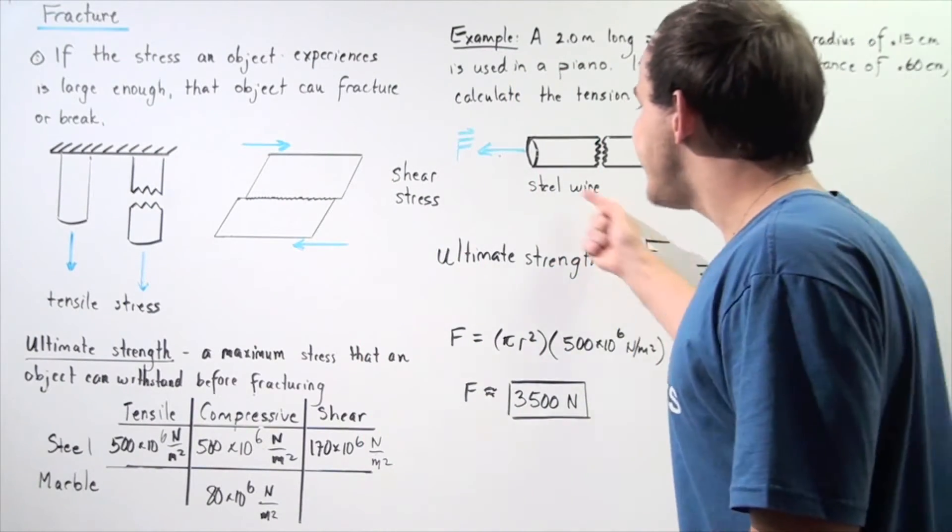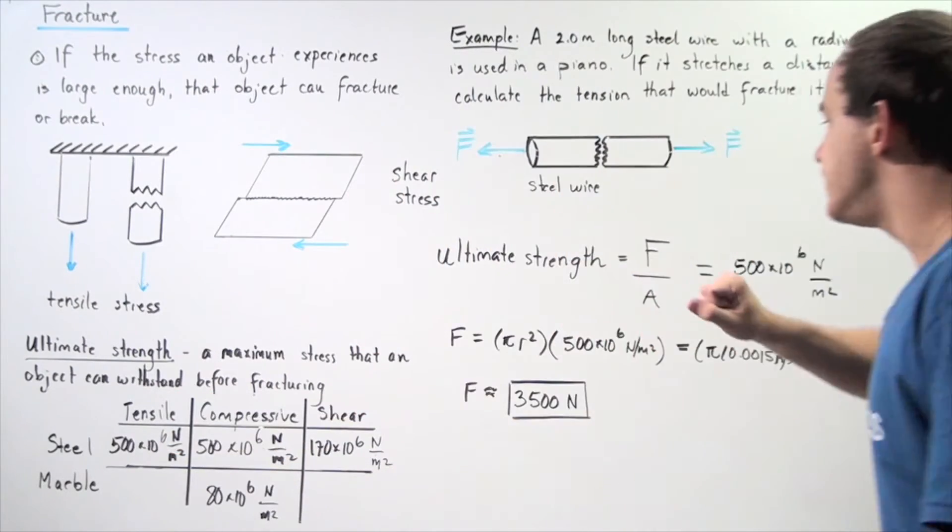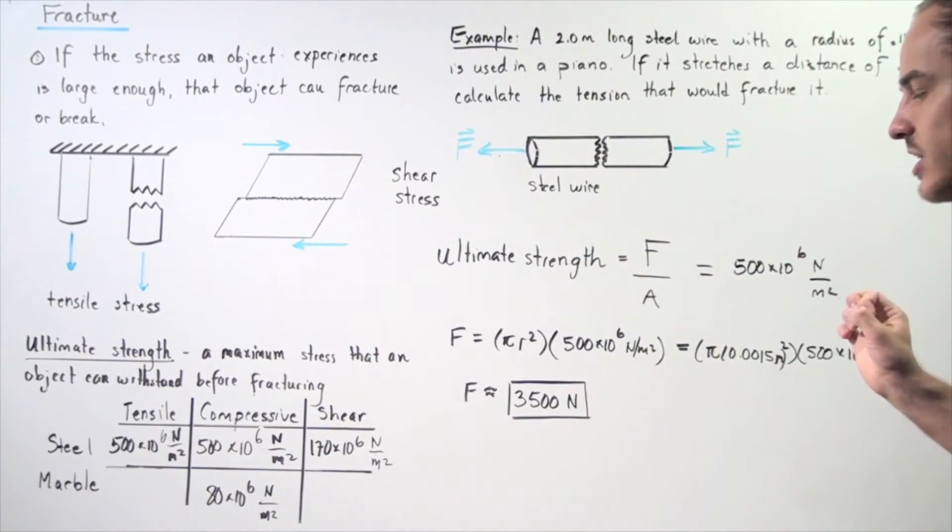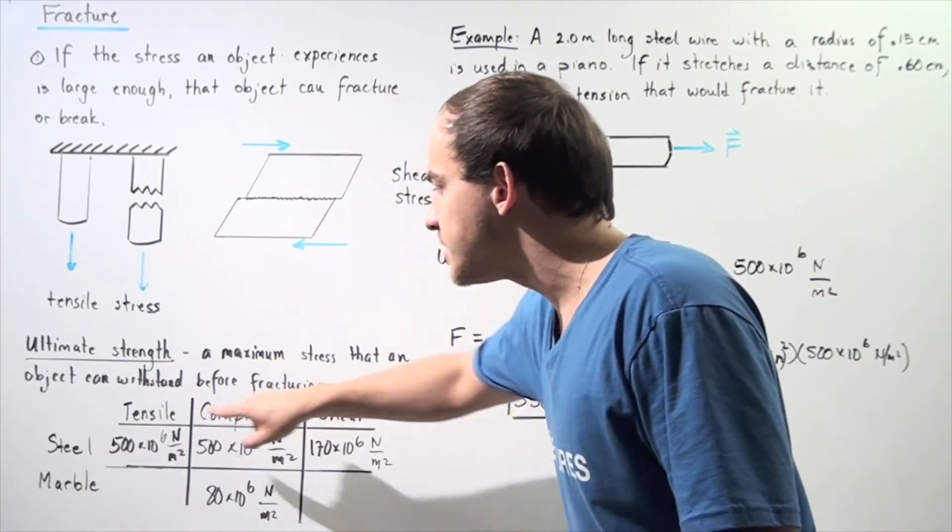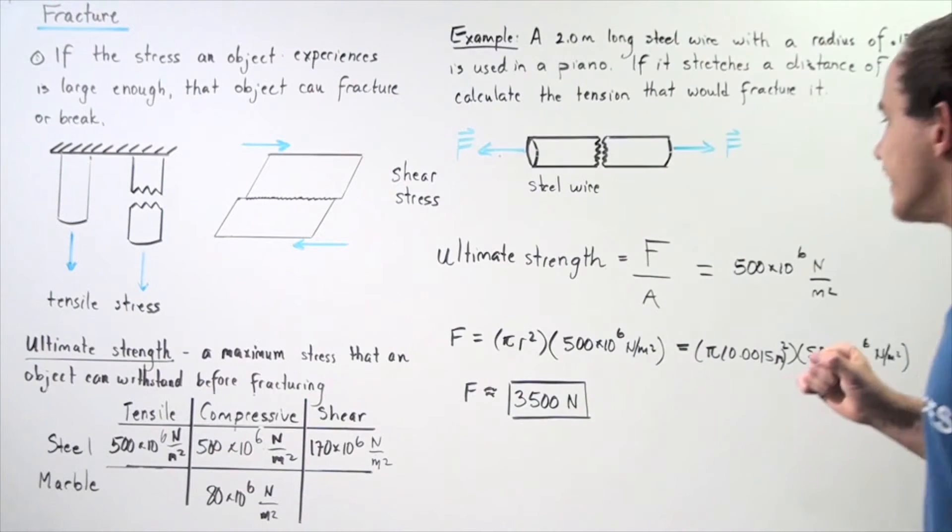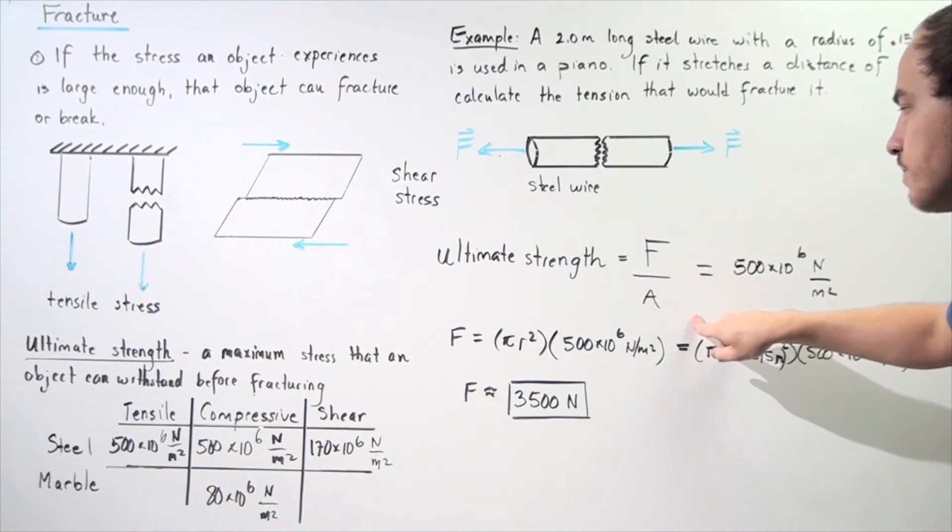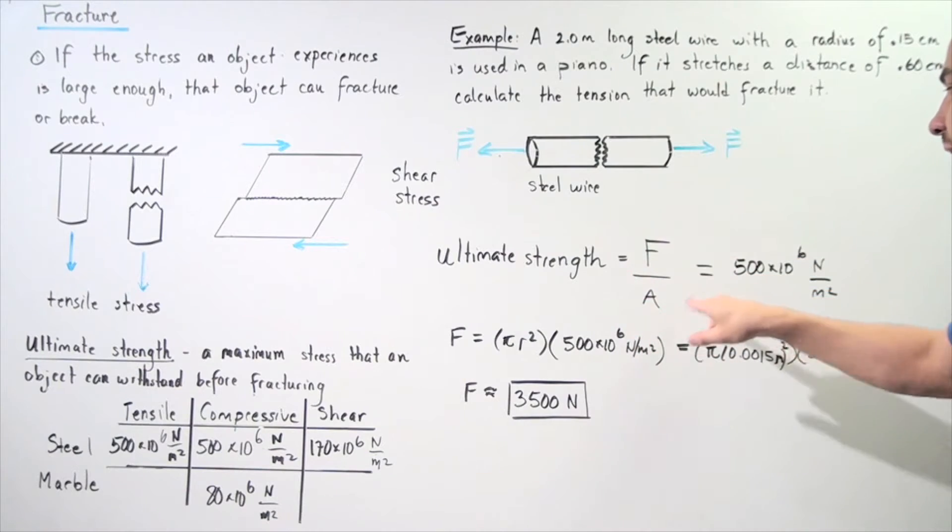So we're essentially taking the ultimate strength of our steel wire given by this quantity and we're equating it. Notice that the units of our ultimate strength is newtons per meter squared. And that means this is equal to force divided by area. So force divided by area is equal to this quantity, 500 times 10 to the 6 newtons per meter squared.